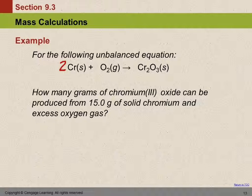Starting with chromium: we have one on the left and two on the right, so put a 2 in front of chromium. But then on the right we have three oxygens and on the left two—that's an odd-even issue, which means we need to double everything. Erase that 2 and make it a 4, then double the Cr2O3 coefficient to 2. Now we have four chromiums on each side and six oxygens on the right, balanced with a 3 in front of O2. On an exam, I would give you the balanced equation.